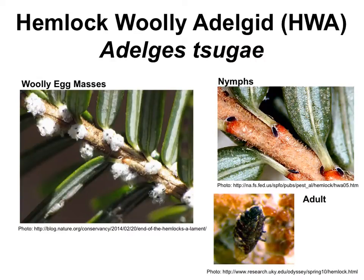The other species of invasive pest on hemlocks is the hemlock woolly adelgid, or HWA for short. The species name is Adelges tsugae. Adults, shown here, range in size from about 0.8mm to 1.5mm long. The nymphs, over here, are 0.3mm to 0.5mm long. The eggs are covered in a woolly-looking white waxy coating called an egg mass, which is usually on the order of about 3mm in diameter.